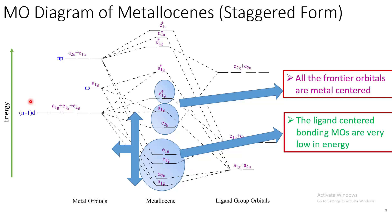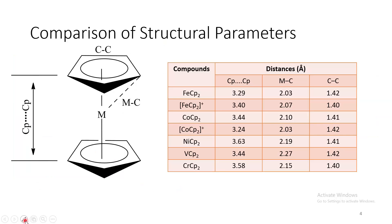And there are total 9 bonding and non-bonding orbitals that can accommodate total 18 electrons. Let us compare the structural parameters for these sandwich complexes. If we see carefully, the metal-carbon bond distance and the distance between the cyclopentadienyl rings, they vary significantly across all these complexes. But if we look at the carbon-carbon bond distance, it remains practically constant. Now, what are the reasons for this?